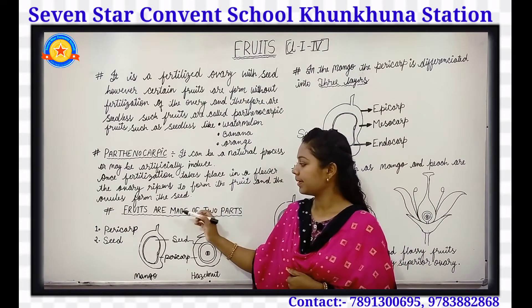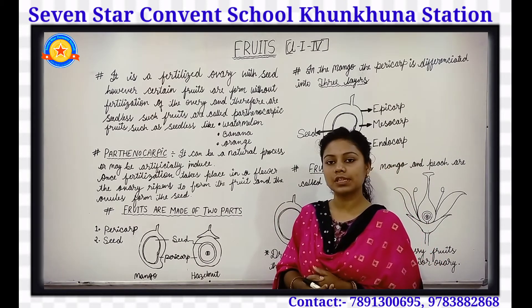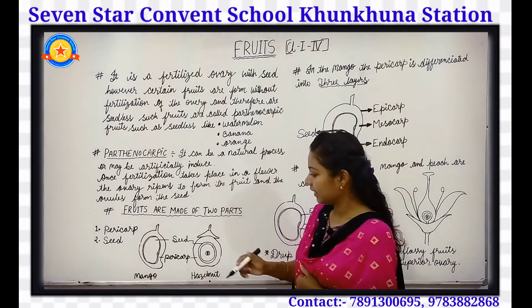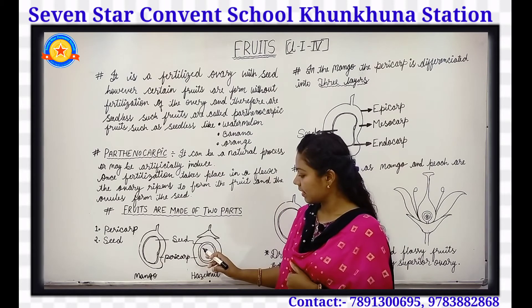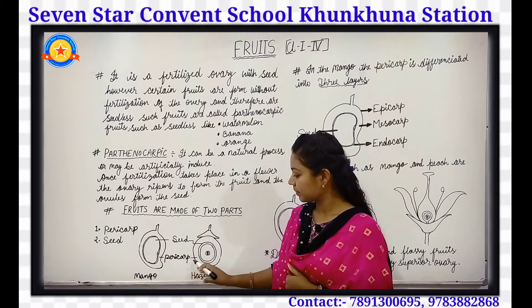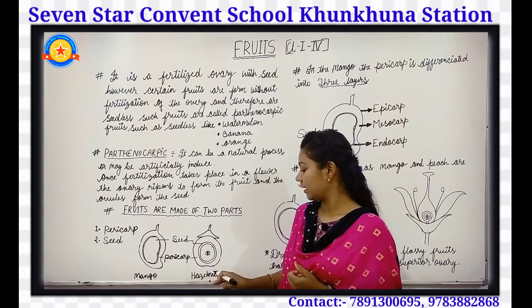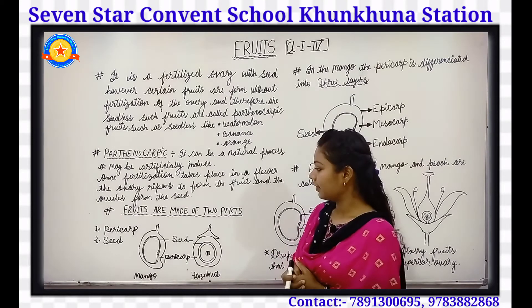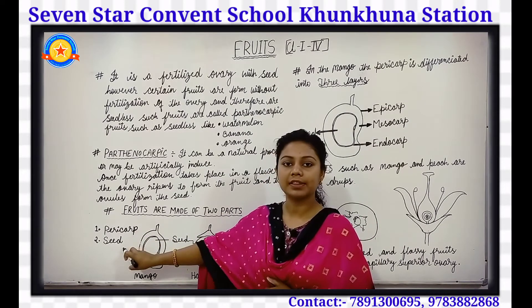Next, we will talk about the fruits being made of two parts. The fruits are made of two parts — they are pericarp and seed. This is the seed inside the fruit. And this is the pericarp. The pericarp can be sweet and fleshy, as in a mango, or dry, as in a hazelnut. These are the two parts of a fruit: pericarp and seed.